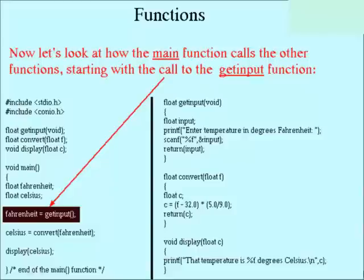So where we left off, we went through and traced through the entire main program, and how it called and returned values from all the other functions. Let's take a closer look at how the main function calls those functions, starting with the call to the getInput function.